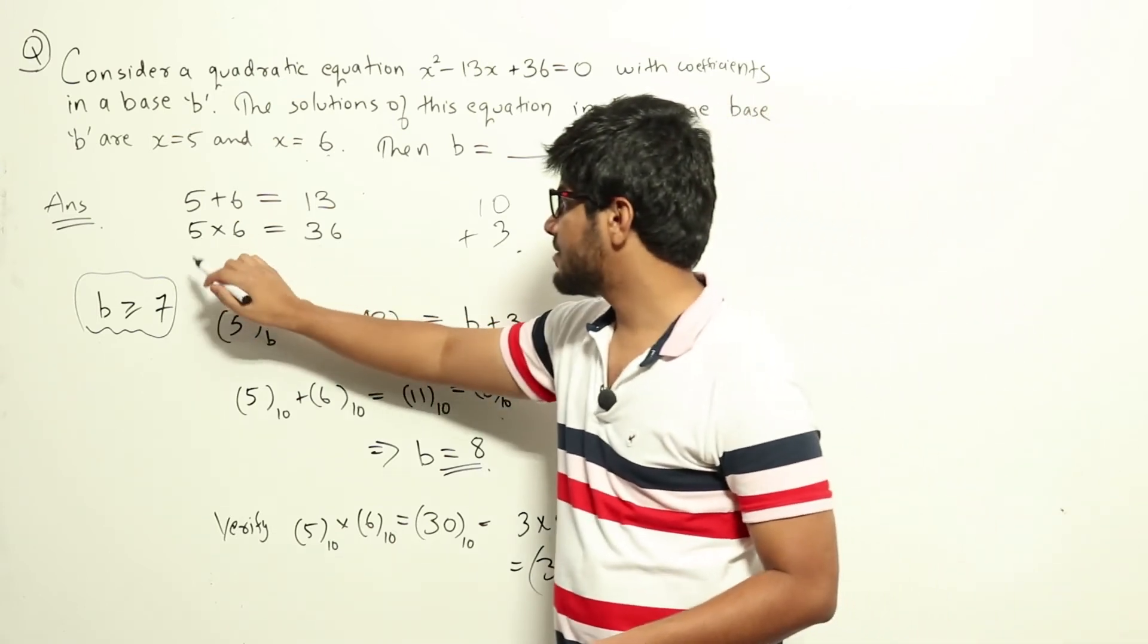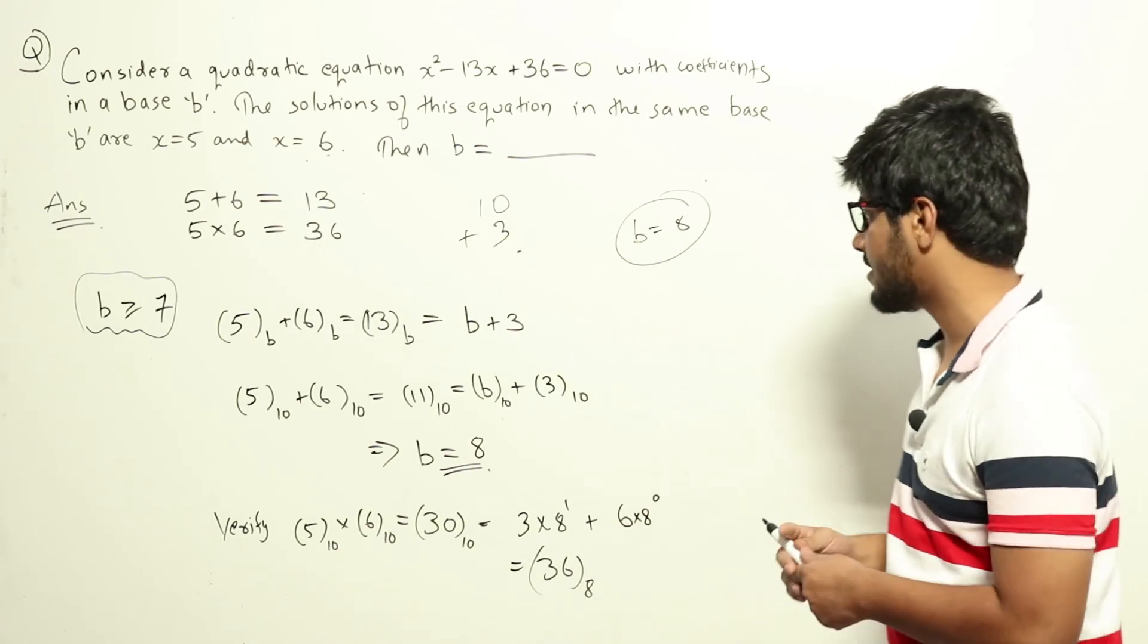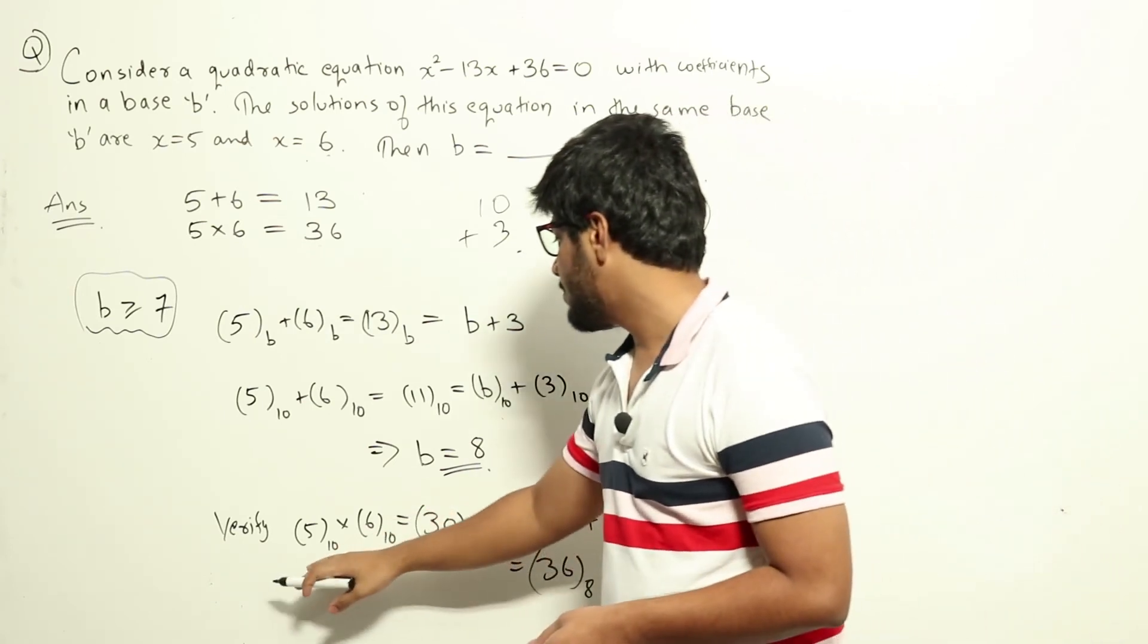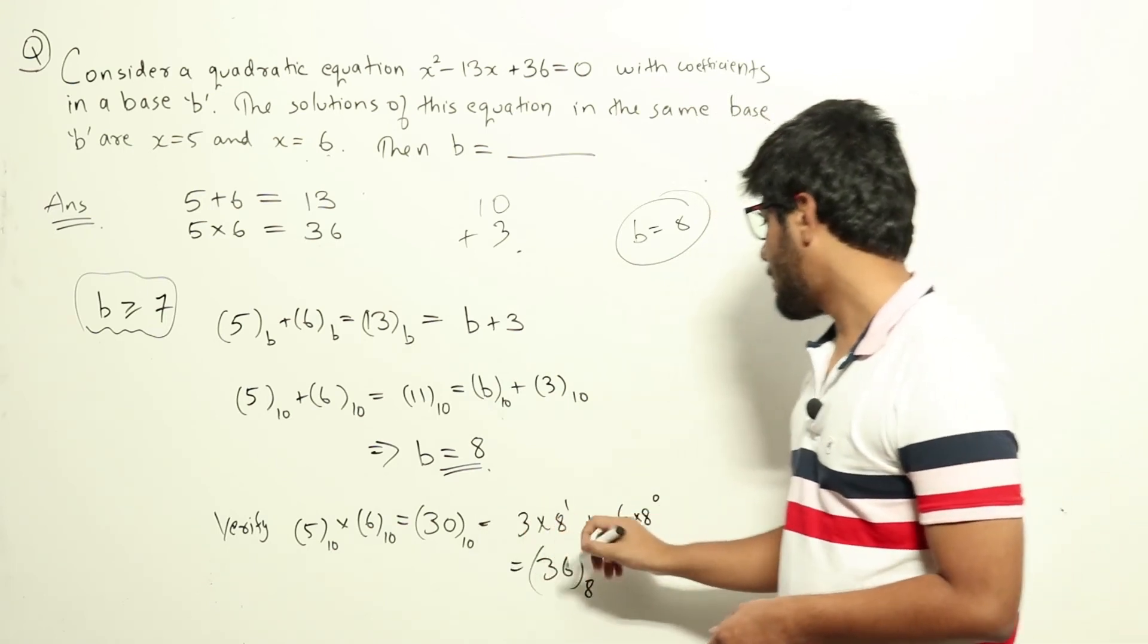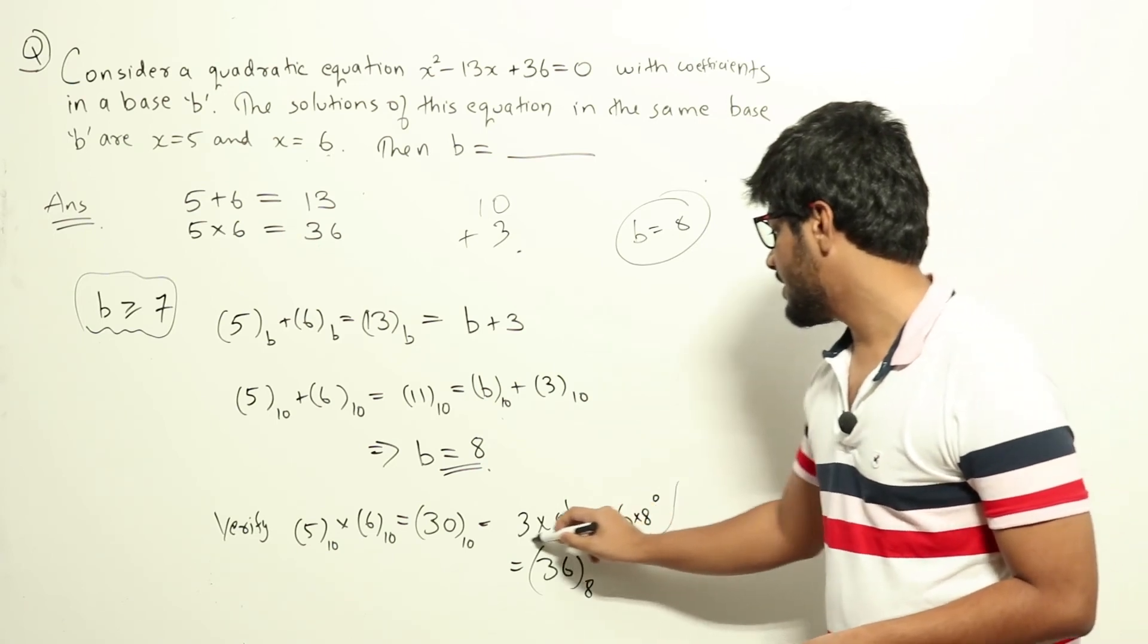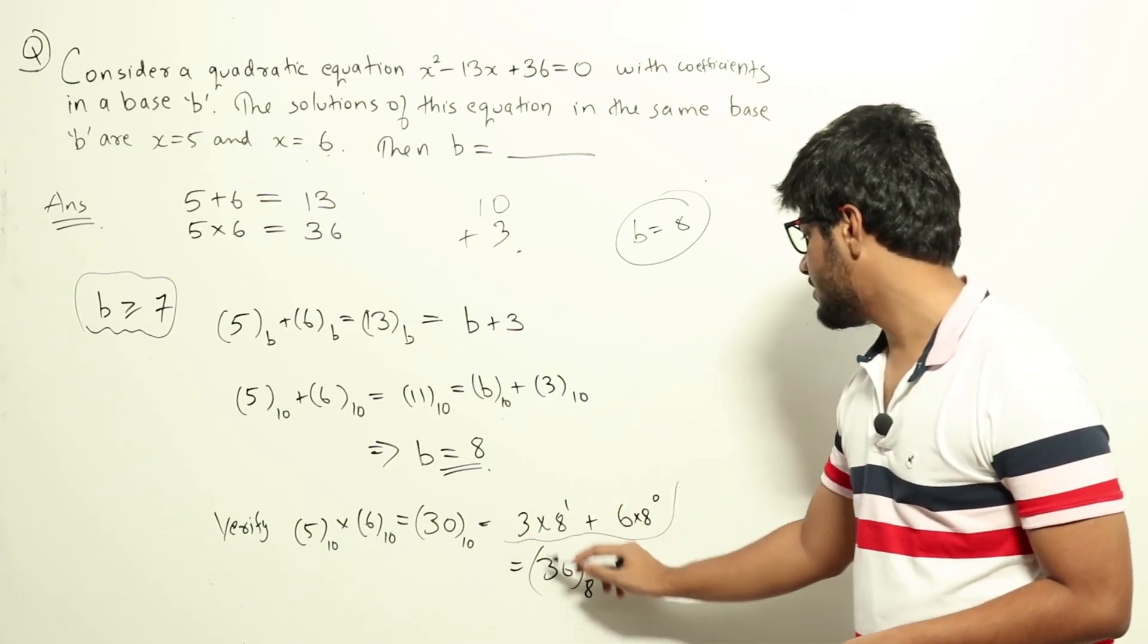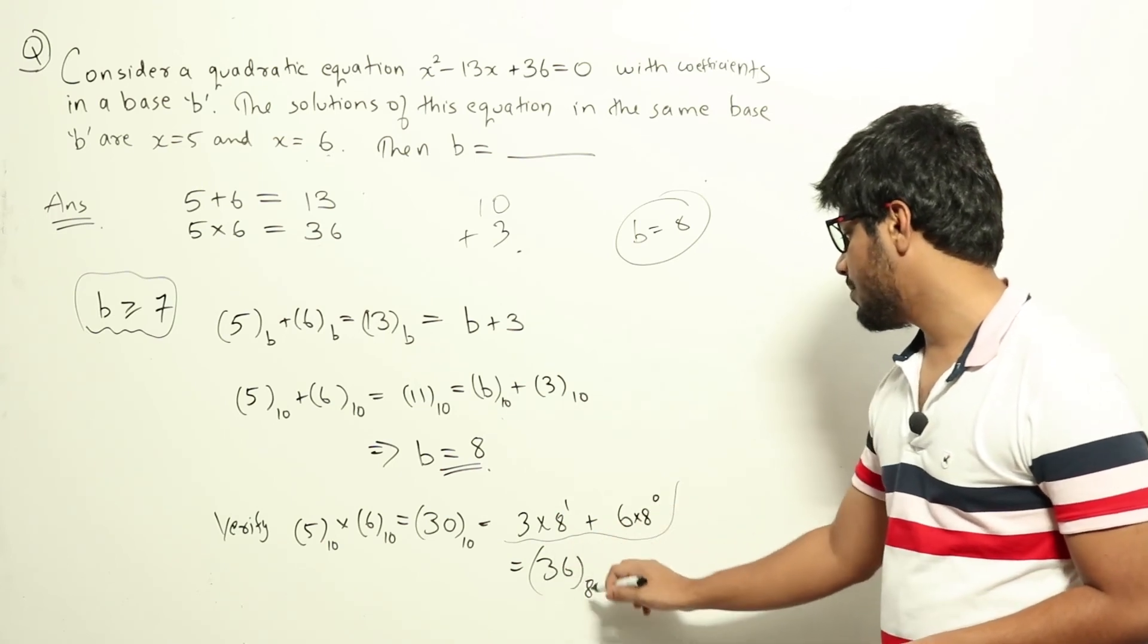Now we can verify this. We have also been given 5 into 6 equals 36. So 5 in base 10 into 6 in base 10 will be 30. Now 30 will be 3 into 8 raised to 1 plus 6 into 8 raised to 0. Now this in base 8 we will write as 36 in base 8.